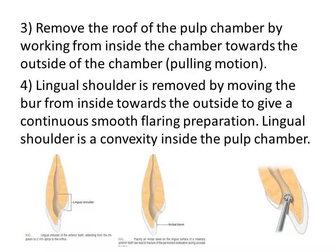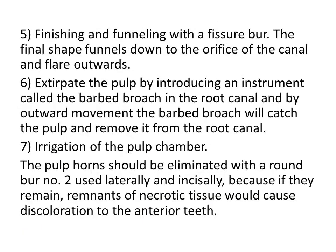Never forget that the lingual shoulder should be removed to provide a straight line for the instruments. Then finish funneling with the fissure bur. The final shape should funnel down to the orifice of the canal and flare toward the outside. The widest diameter of the cavity should be at the occlusal side. Extirpate the pulp by introducing an instrument like a barbed broach into the canal orifice — the tissue will attach to it. Then remove it in an outward motion to take out the pulp tissue.